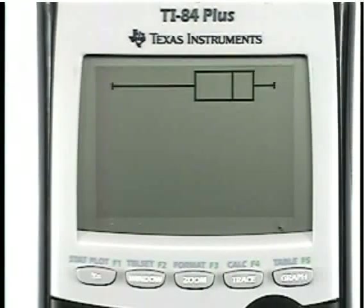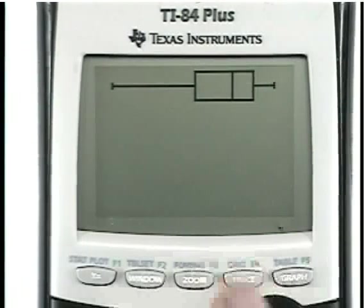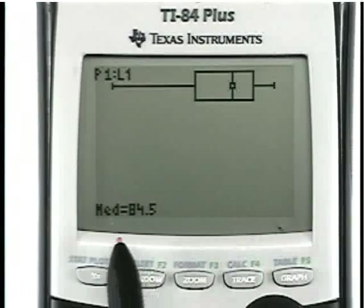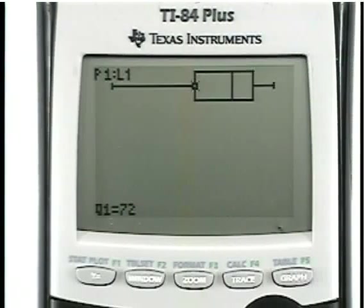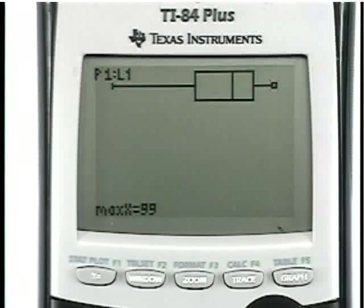That's the box plot for the data. Matter of fact, we drew that by hand earlier based on the five number summary. If I do trace, it immediately jumps to the median, which is 84.5. If I move the left arrow key, there's the first quartile, 72. There's a minimum 44. Go back to the right, there's Q3 at 92. And one more to the right, there's the maximum. So there's a box plot very quickly in your calculator, along with doing quartiles.